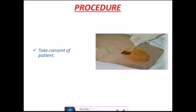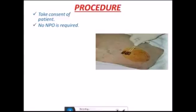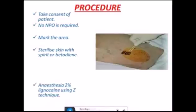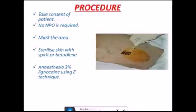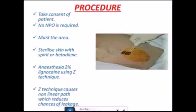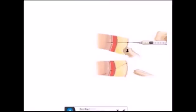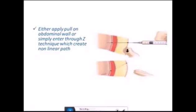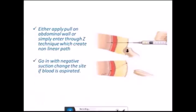The procedure: First, clean the area. Before that, take the patient's consent since this is an invasive procedure. No nil per oral is required. Mark the area, then sterilize the skin with spirit or betadine. Apply 2% local anesthesia using the Z-technique, which causes a non-linear path and reduces the chances of leakage. Simply pull on the abdominal wall and enter using the Z-technique to create a non-linear path.